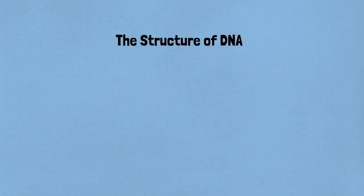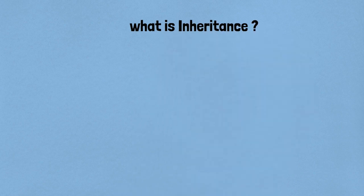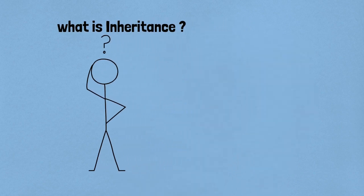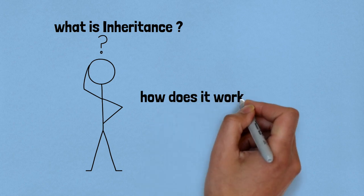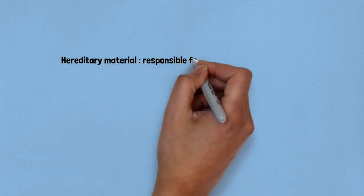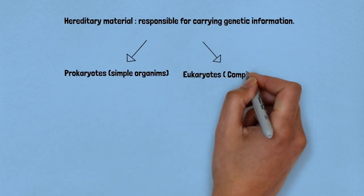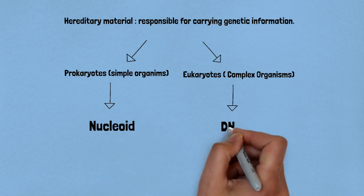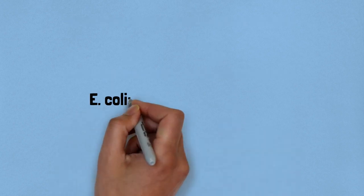Hi guys, today we're going to look at the structure of DNA from class 12th NCERT. The theory of inheritance existed since very long but no one could really understand the underlying scientific concepts behind how inheritance works. We all know that the hereditary material in simple organisms is nucleoid and in complex organisms we have the deoxyribonucleic acid or the DNA.